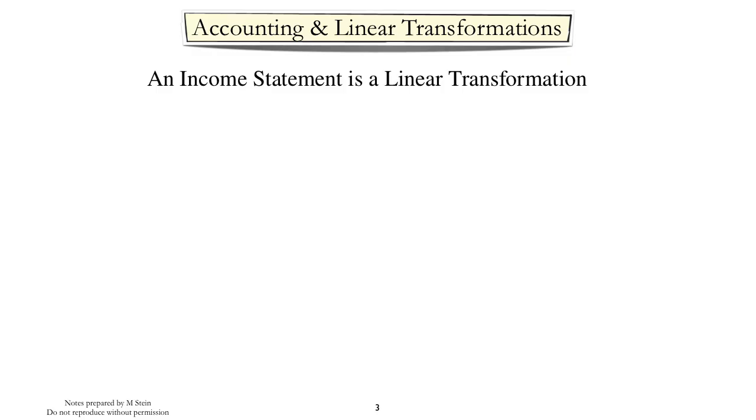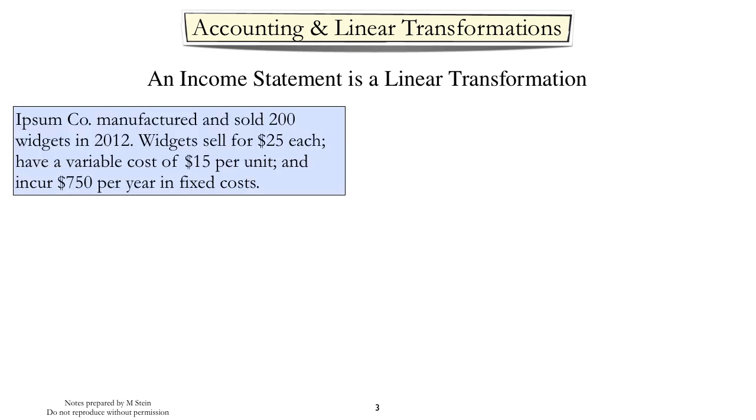I want to start the section on estimating costs with a small mathematical digression. I want to convince you that an income statement is what mathematicians sometimes call a linear transformation, or what we more commonly think of as a line. Let's begin with a pretty simple example. Here we have a company that sells widgets in 2012. It sold 200 widgets for $25 each. The widgets have a variable cost of $15 per unit, and the company incurs $750 in annual fixed costs.